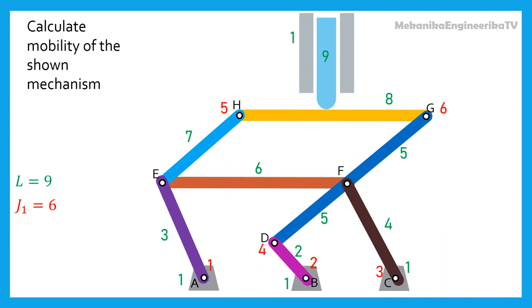There are 2 pin joints of second order, each one should be counted twice. Here the second-order pins are pin E and pin F. The rotating joints of second order are the pins which connect 3 links.